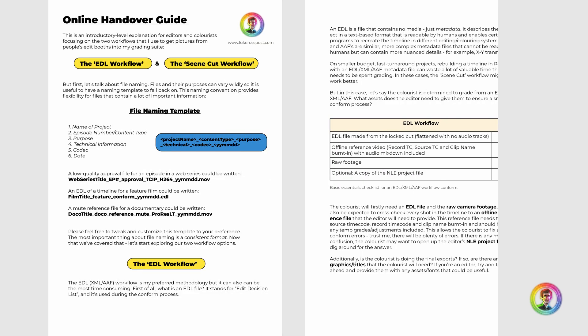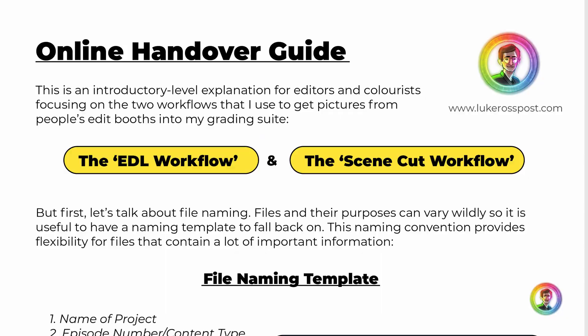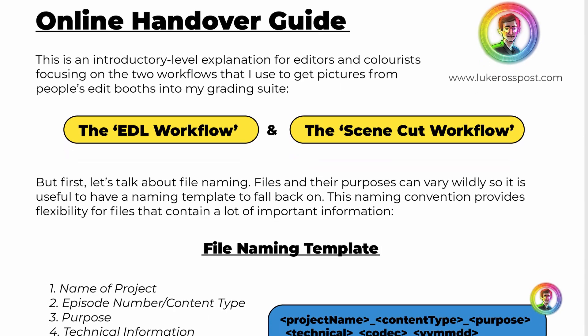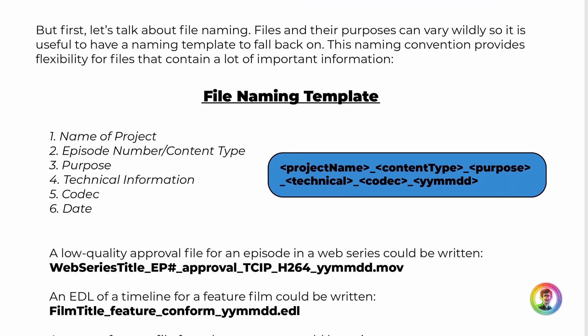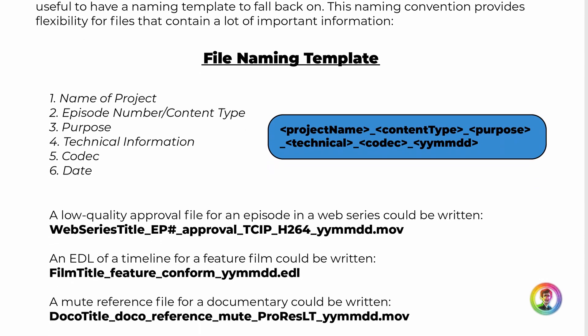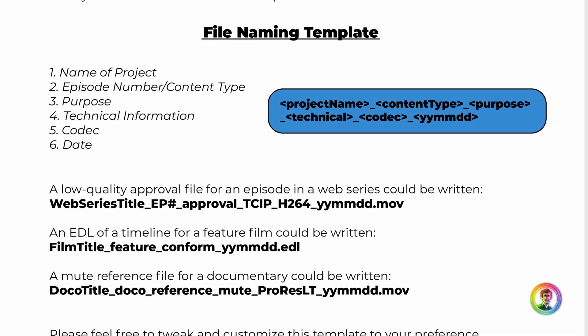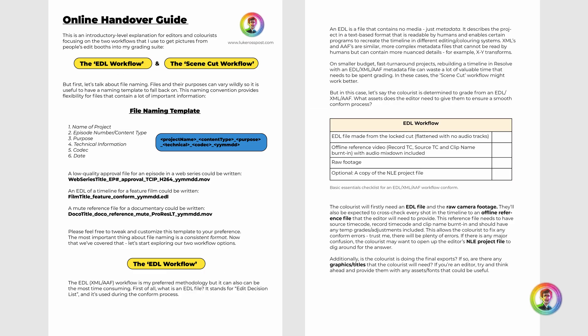In this first video, we're going to focus on this six-page PDF that I've created. It covers the main two workflows that we're going to cover in the next two videos — the EDL workflow and the scene cut workflow — and also focuses a little bit on file naming. There's nothing more satisfying than receiving consistent file names from either an editor or colorist, so it's a really important point to cover right off the bat. This PDF is free to download in the link below, so definitely go check that out.